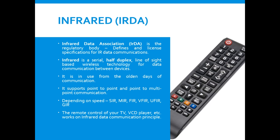The typical communication range for infrared is 10 centimeters to 1 meter, though it has been developed to cover up to 10 meters. You can increase the range by increasing the transmitting power of the IR device, but there is a limitation — that is why we restrict it to meters. It is essentially a short-range, line-of-sight communication.